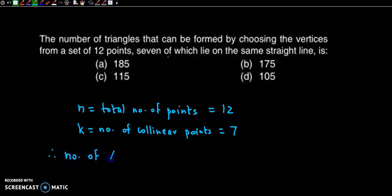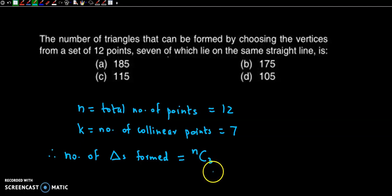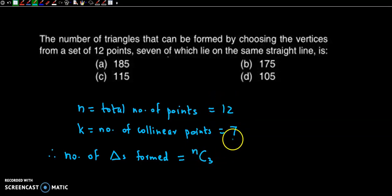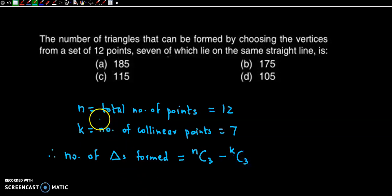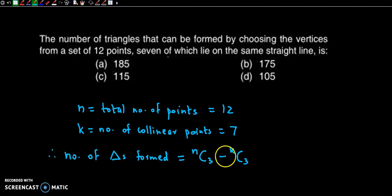The number of triangles that can be formed is nC3, because a triangle requires 3 non-collinear points. So first consider 12C3, but since there are 7 collinear points, we subtract kC3. The formula is: number of triangles = nC3 minus kC3.